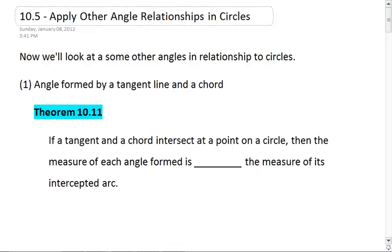First, we're going to look at an angle formed by a tangent line and a chord. What this looks like is: we have a tangent line, and then any chord that extends from that point, the tangent point.